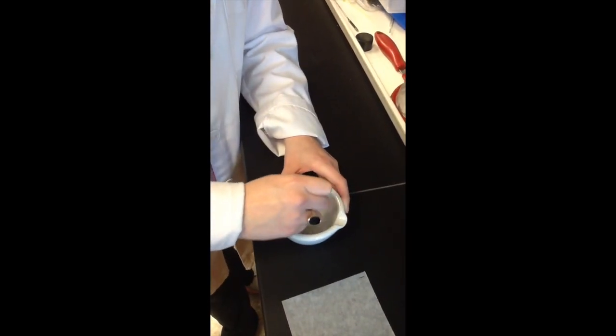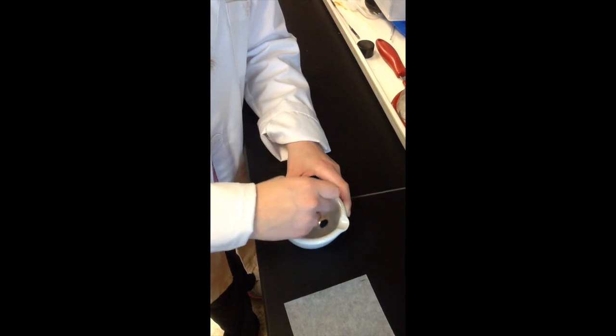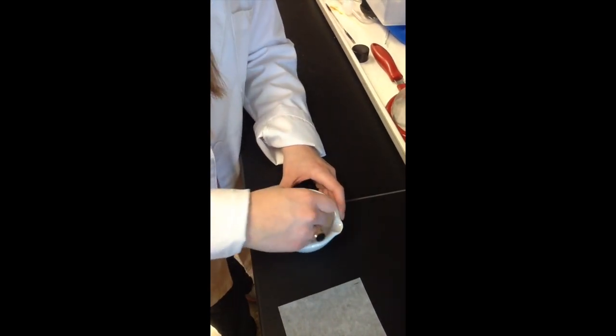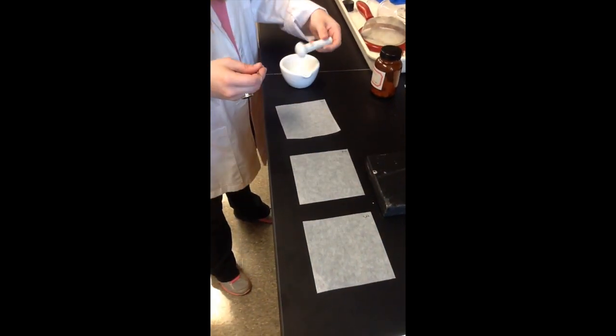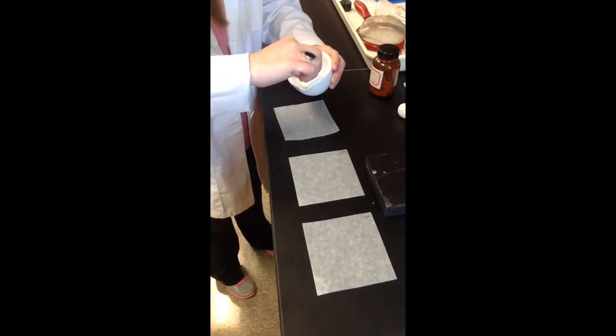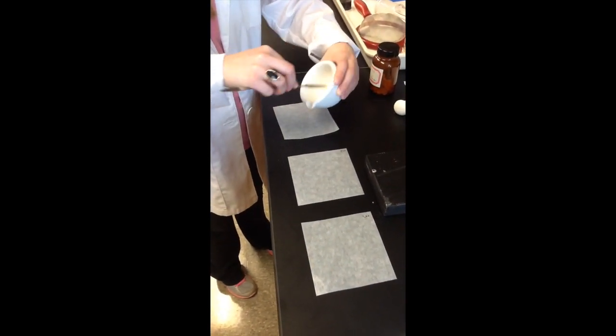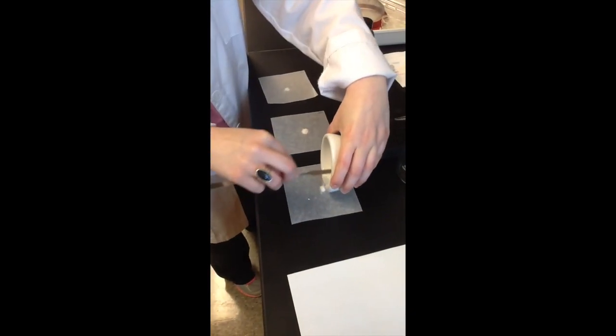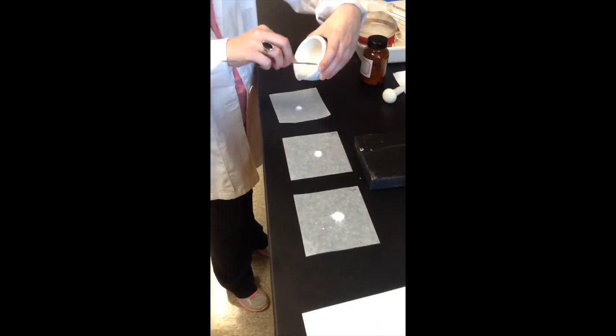Using the mortar and pestle, crush up the tablet into a fine powder. Then divide the crushed tablet between the three weigh papers. You will perform three titrations with these three samples. Once you have divided the crushed tablet between the papers, weigh the paper and crushed tablet to determine the mass of the crushed tablet.